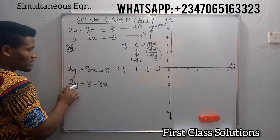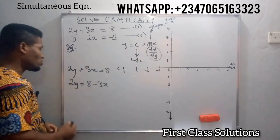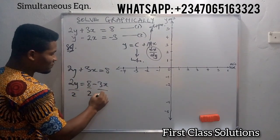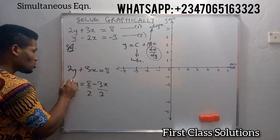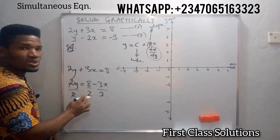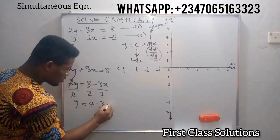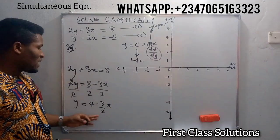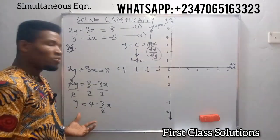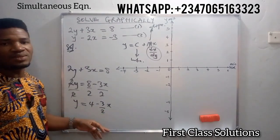We are looking for y and we have 2y, so it means that we're going to divide all through by 2. In this case, we have y equals to 4 minus 3 over 2 of x.